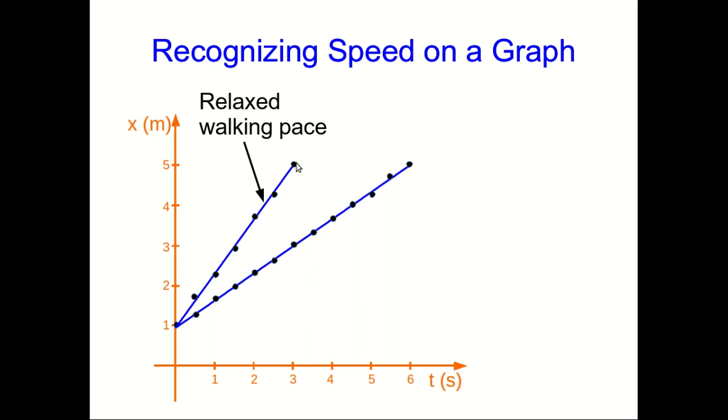Now suppose I do the same thing. I start at 1 meter again, but I walk half as fast. Well, it should take me twice as long to go the same distance. So this graph here is me walking half as fast and taking 6 seconds to walk 4 meters. So this shows us right away, because the main difference between these is their slope, that a steeper slope means faster, and so that's something we can just see looking at a graph.